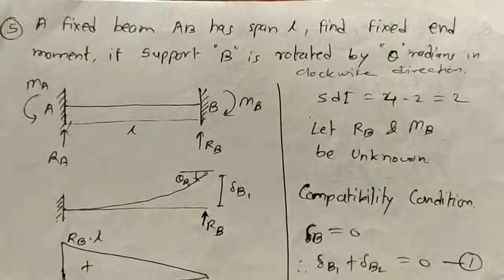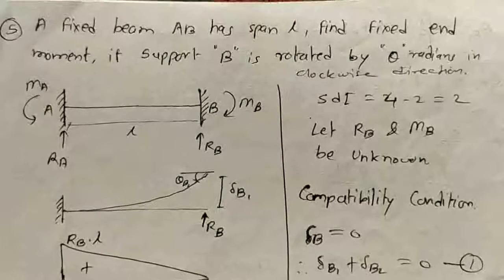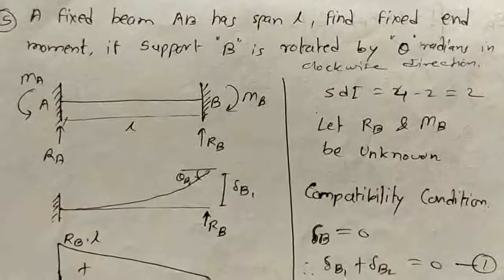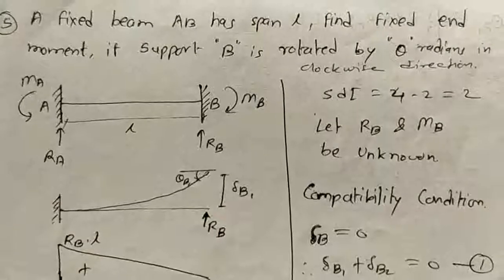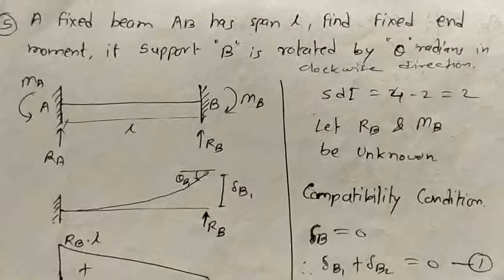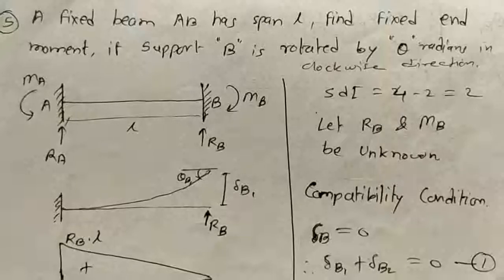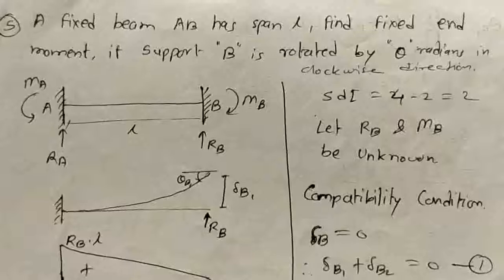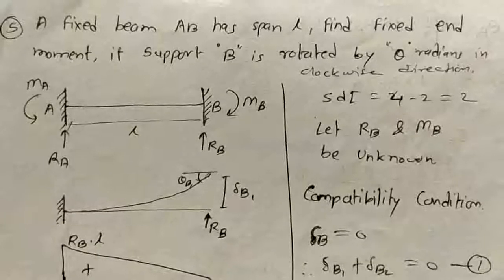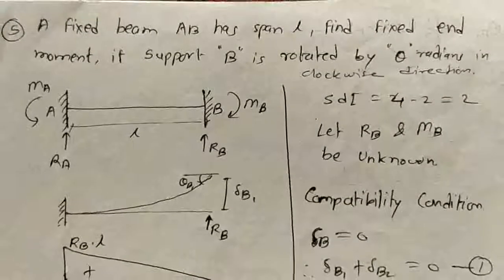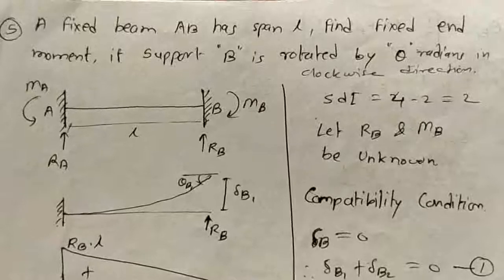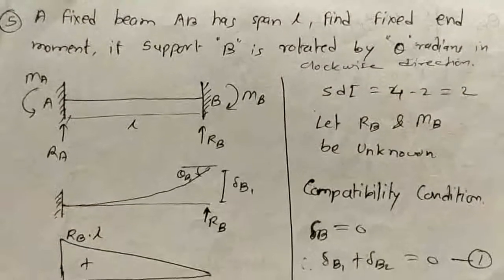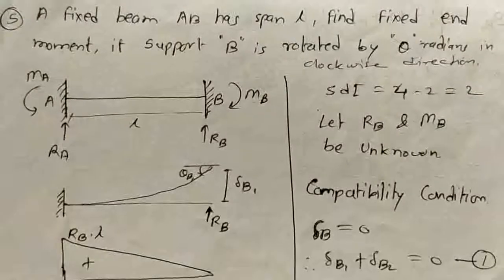First of all, we will find the degree of indeterminacy (HD) of the given structure. For a fixed beam, HD will be equal to 2, since there are 4 unknowns — RA, RB, MA, and MB — minus 2 equilibrium equations, giving HD equal to 2.